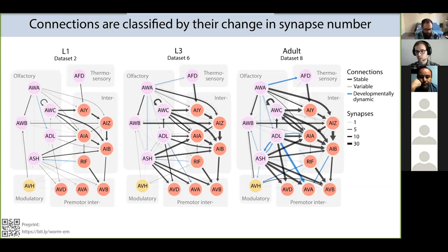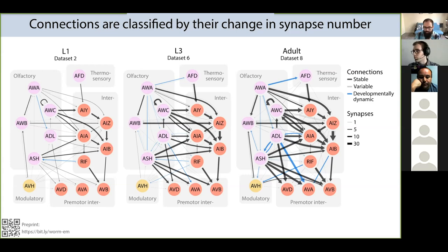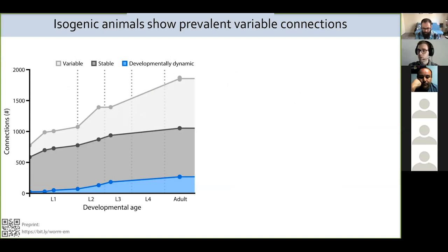For example, looking at a sensory circuit including the major neurons involved in olfaction and thermal sensation, we can examine how it matures across development by looking at each connection one by one across L1, L3, and adult datasets. Some connections — such as AFD to AIY — are stable across development. Some connections, such as AWA to AFD, show a significant stereotyped increase or decrease in synapse number, sometimes even forming new connections or eliminating existing ones at a specific life stage. Other connections, like AFD to AIZ, are variable — they exhibit no consistent trend in synapse number and are not present in every animal.